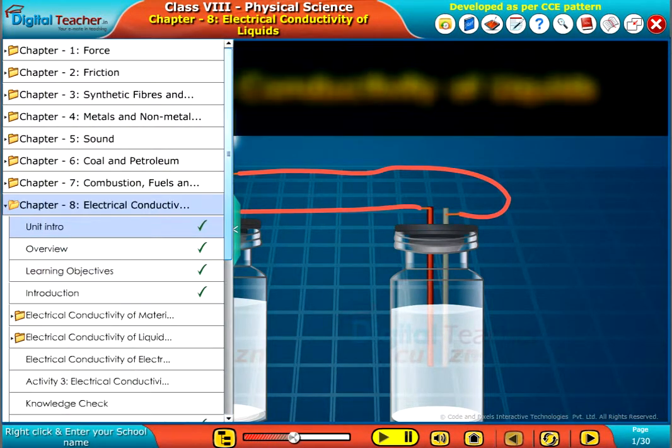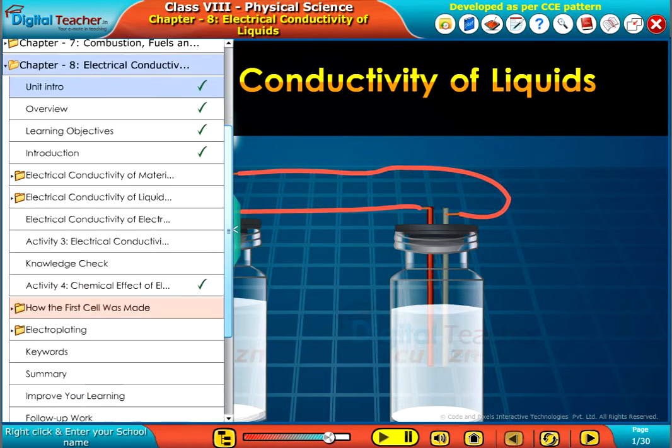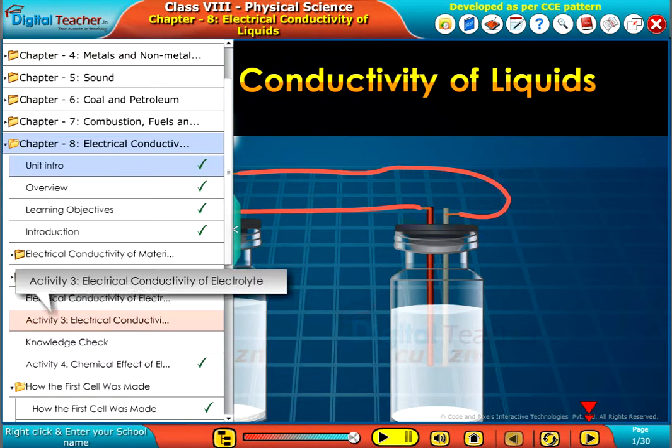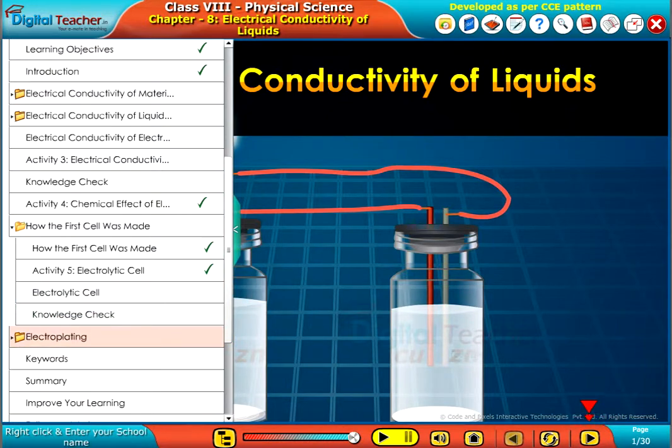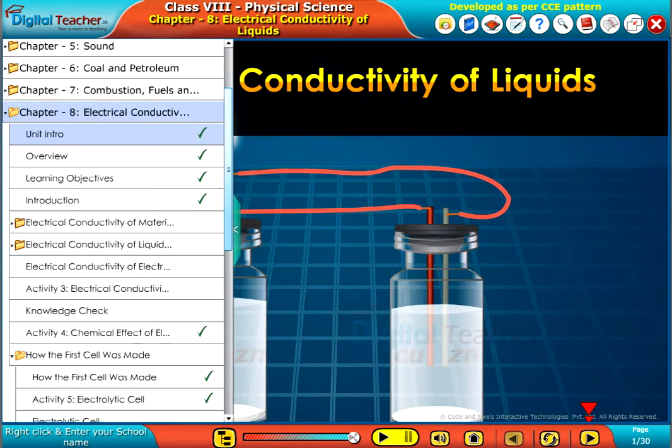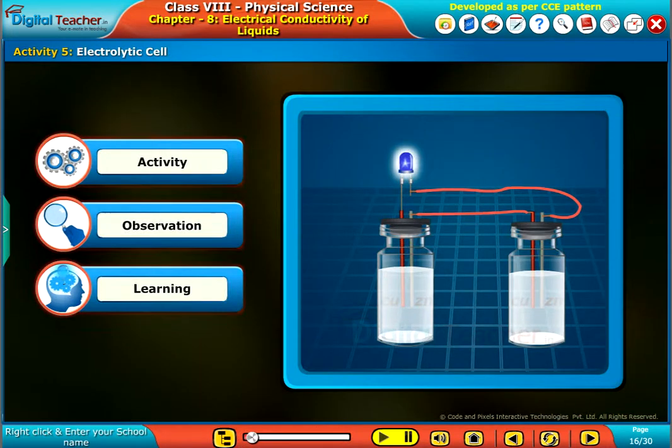Welcome to the chapter electrical conductivity of liquids. Now, let us make a cell with the same metals and chemicals used by Volta by performing an activity.